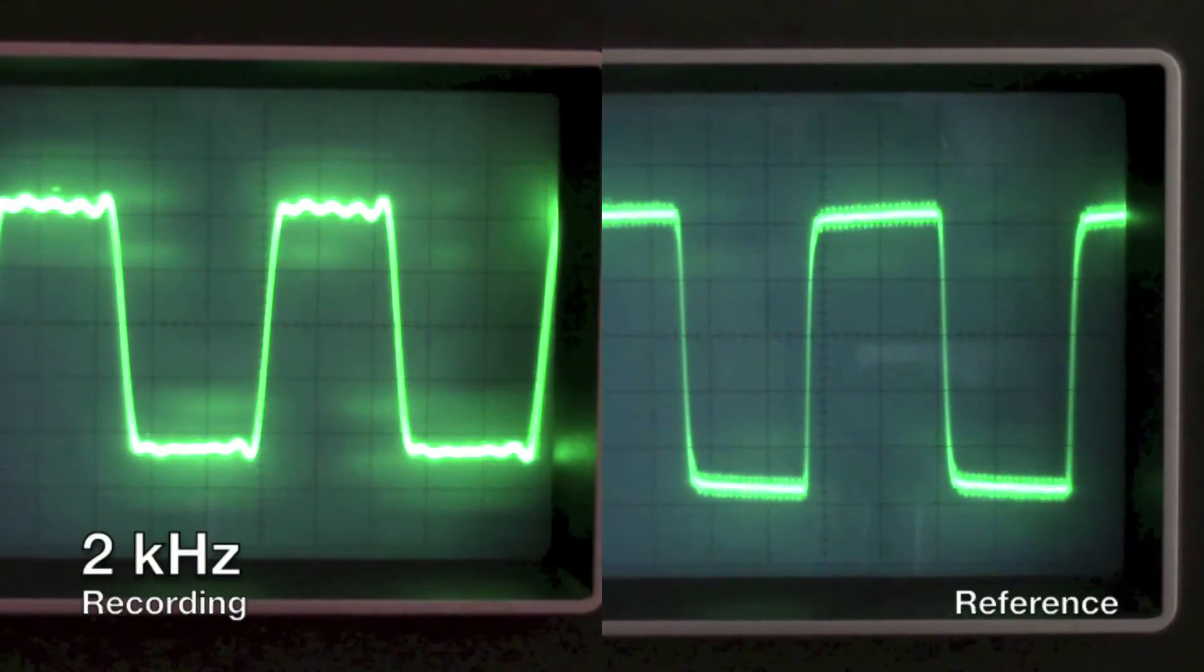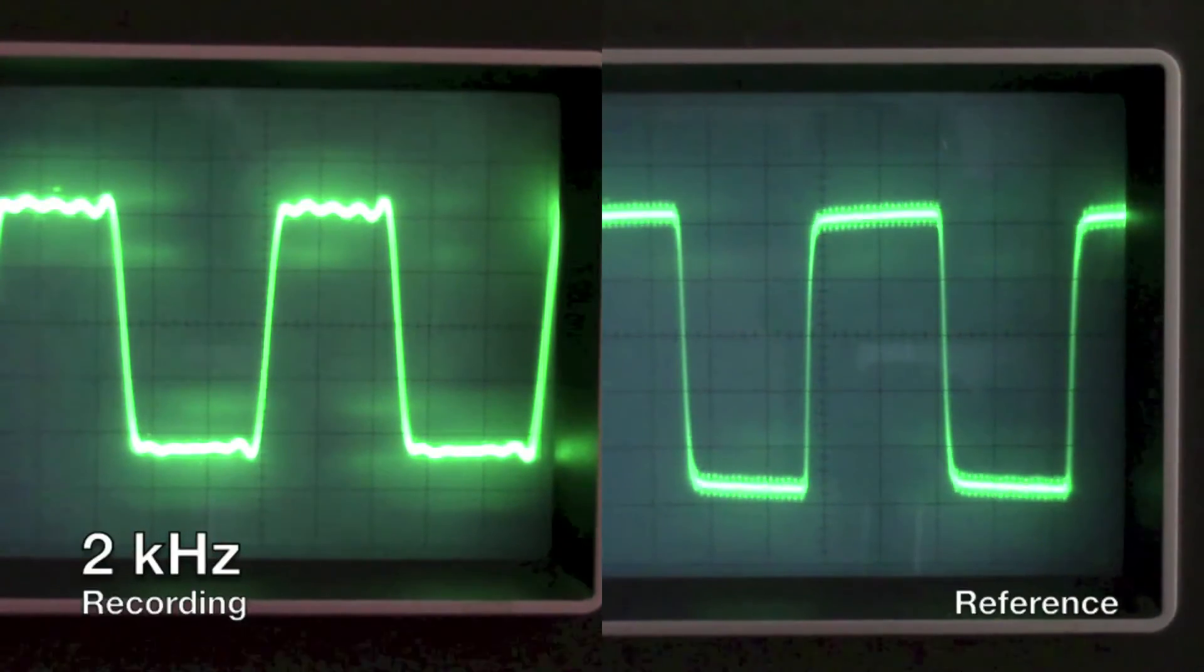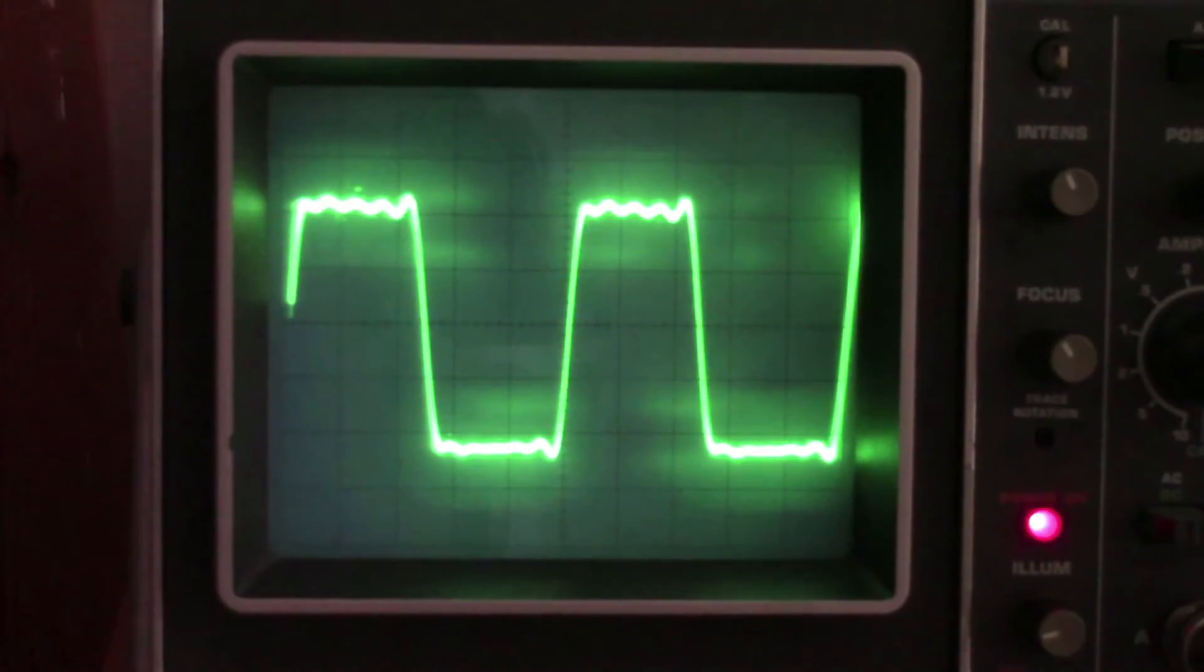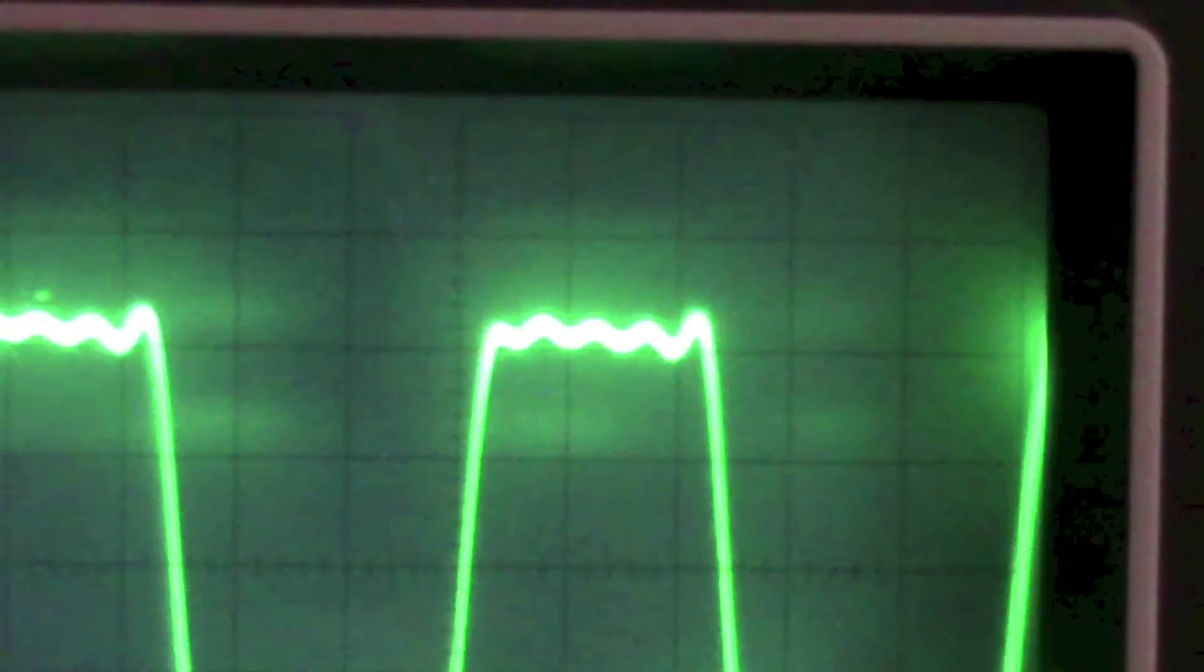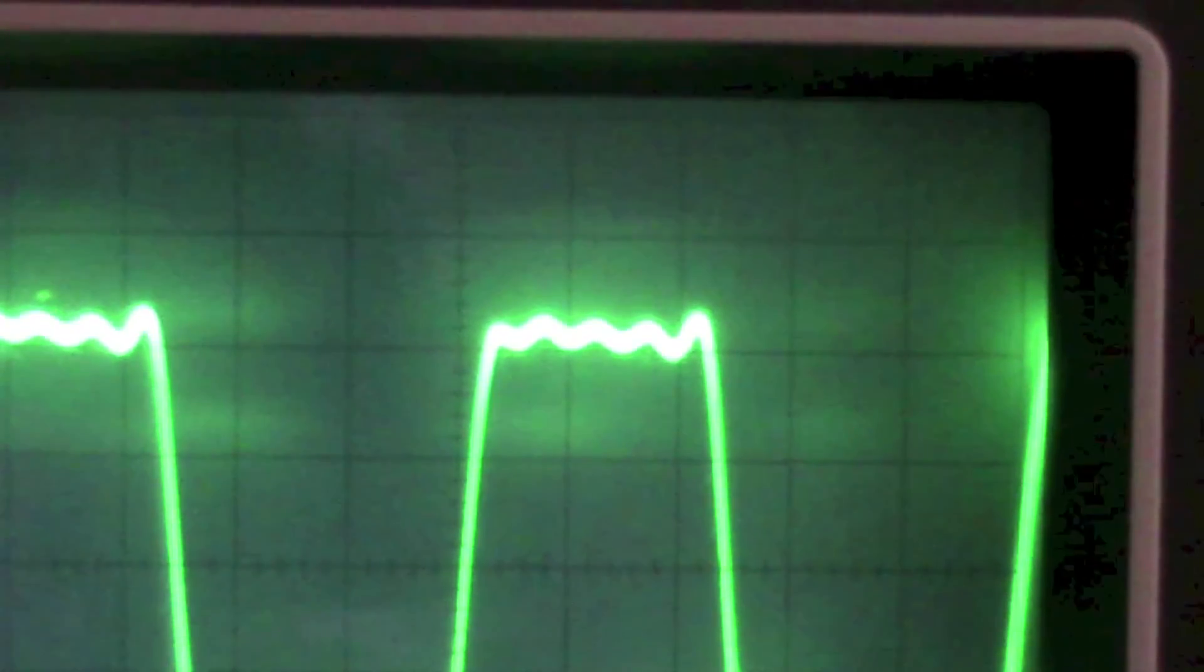A square wave can be represented using an infinite sum of sinusoids. A sinusoid with a base frequency is chosen, then every odd harmonic is added. Since the recorder cannot record all frequencies, only a finite number of sinusoids will be present, and therefore the square wave will only be partially recreated.